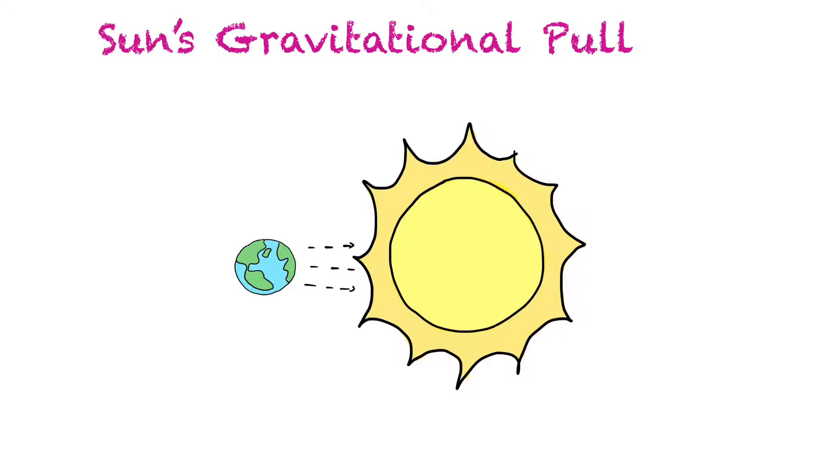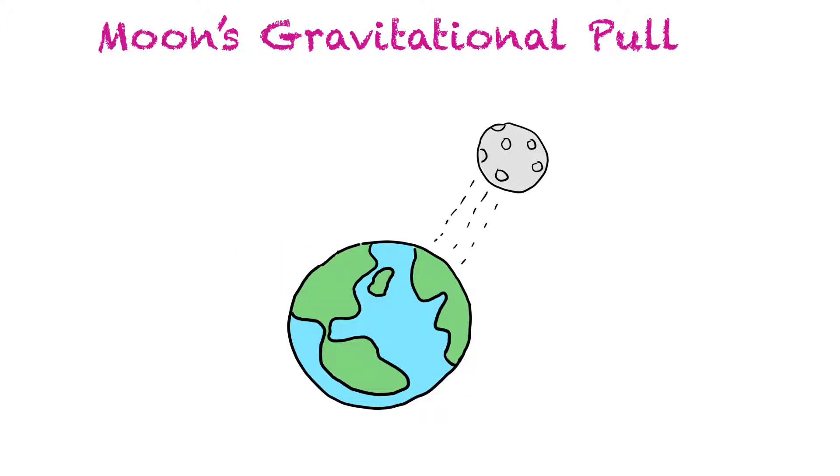The Sun has a big gravitational pull and it's what holds Earth in its orbit. So Earth is orbiting around the Sun because it's pulling it towards it. The Moon also has a gravitational pull and it actually causes our tides here on Earth.